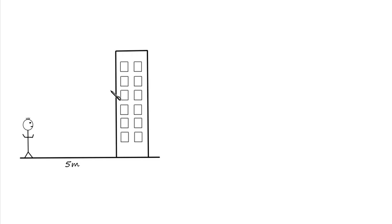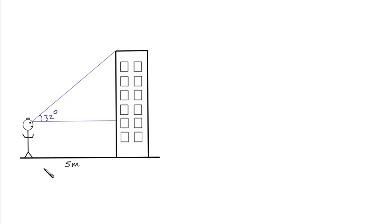The triangle we're going to use is formed between the surveyor's eye line to the top of the tower, along this line here, and by drawing a horizontal line from where he's standing to the base of the tower. The surveyor can use a piece of equipment called a clinometer to measure this angle here — the angle he's looking up at the top of the tower. So let's say that's 32 degrees. The distance from where the surveyor is standing to the base of the tower is 5 metres, so this line at the base of our triangle is also 5 metres.